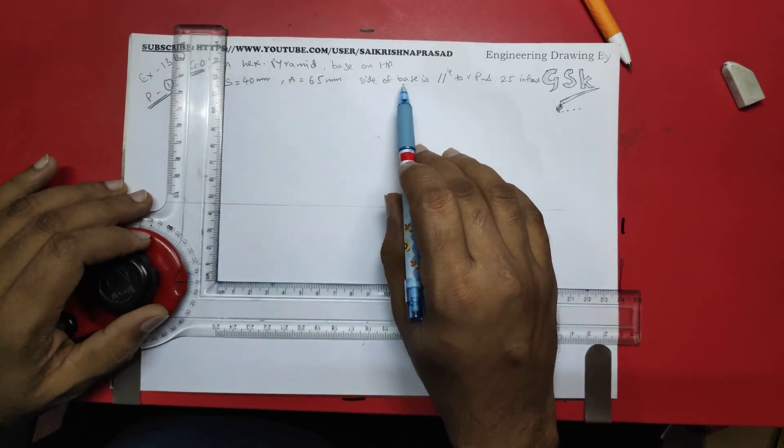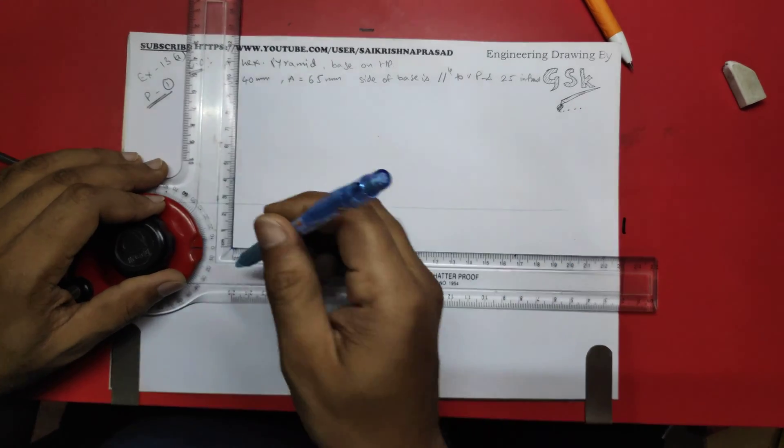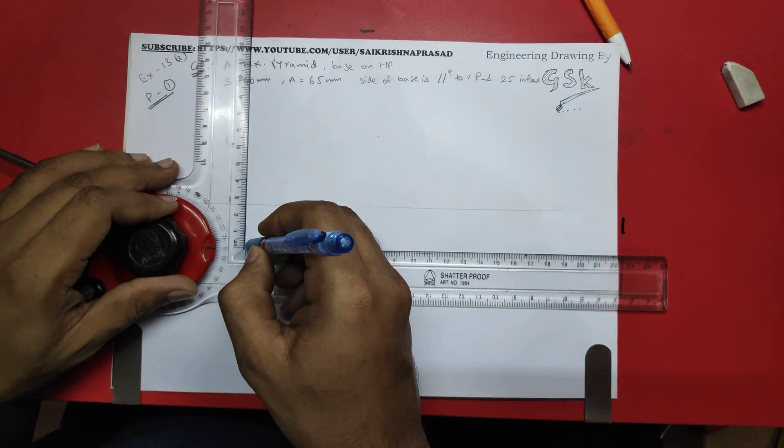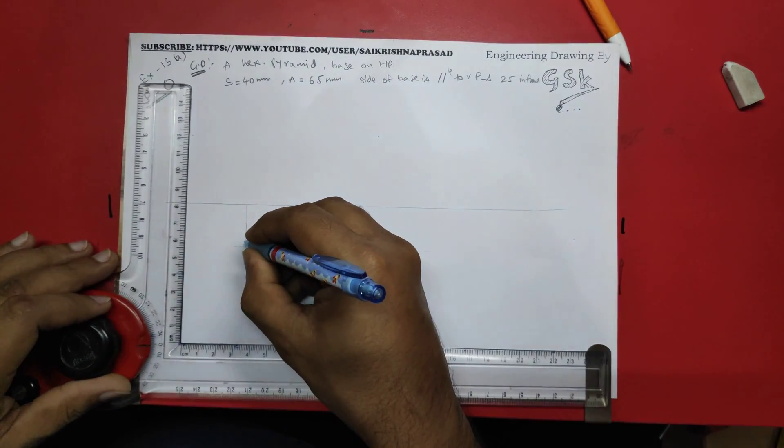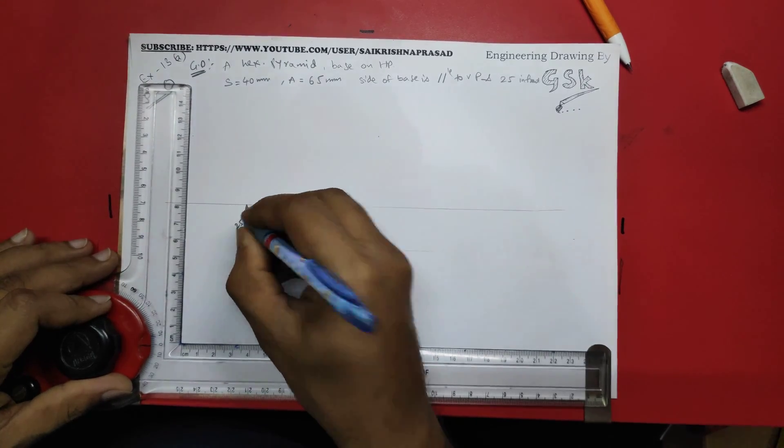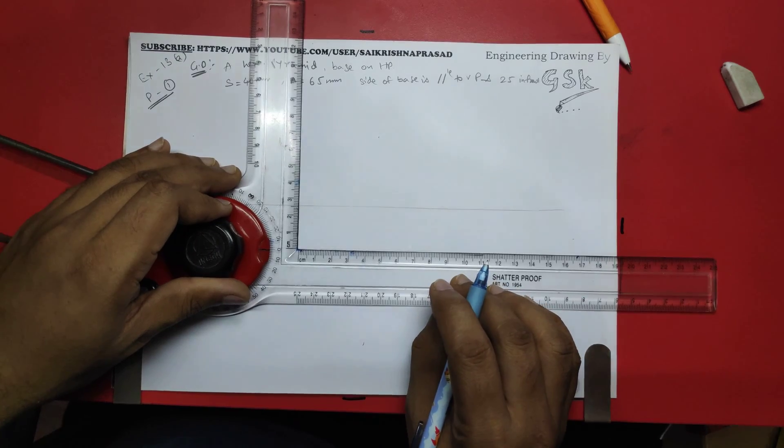Here, the question says that side of the base is 25 mm in front. So I have to take the 25 mm line from here, 25 mm at distance, and have to draw the hexagon over here.